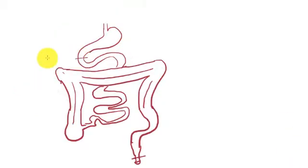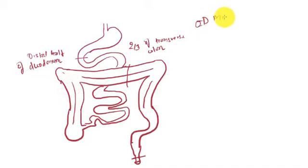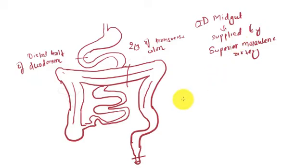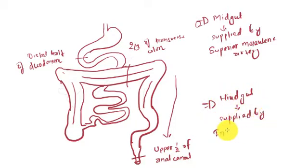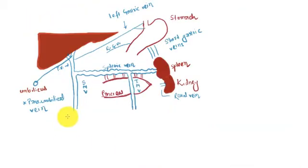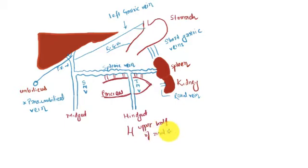From the distal half of the duodenum to two-thirds of the transverse colon is the midgut, which is supplied by the superior mesenteric artery and drained by the superior mesenteric vein. From two-thirds of the transverse colon to the upper half of the anal canal is the hindgut, supplied by the inferior mesenteric artery and drained by the inferior mesenteric vein. The foregut is supplied by the celiac artery.